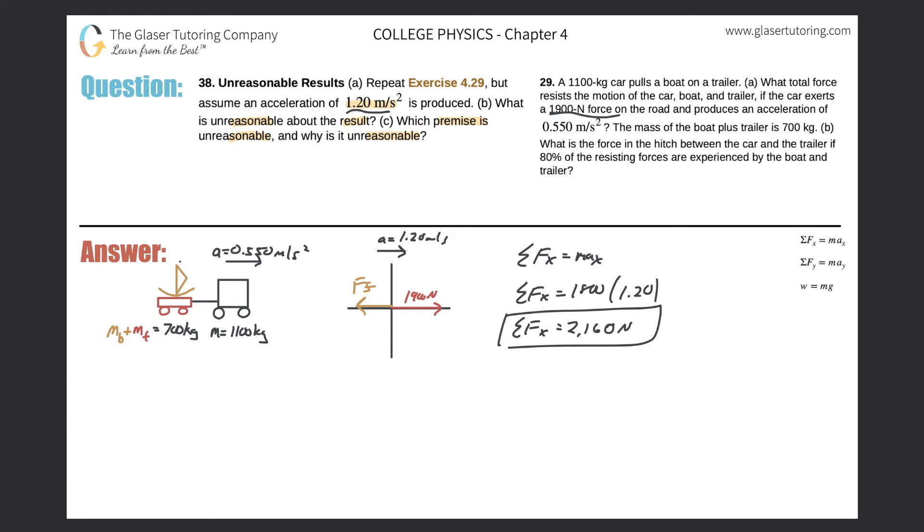So how in the world are we going to get to 2100 newtons or a little over 2000 newtons? There's nothing missing in the problem, it's just not possible. That's why it says it's an unreasonable result. There's no way we can achieve this required force when the only force that's applied in the problem is from the car itself and it tells us 1900 newtons.